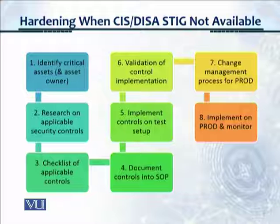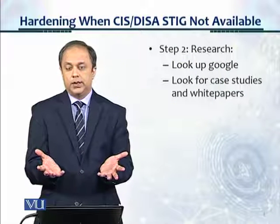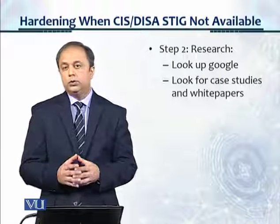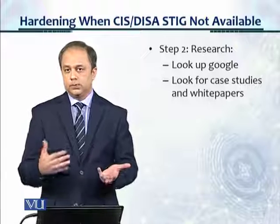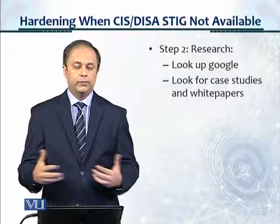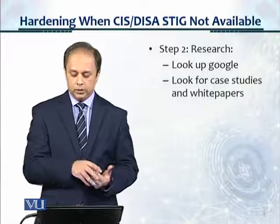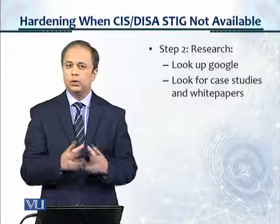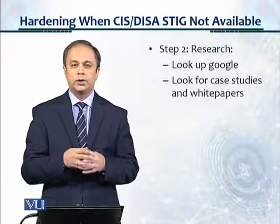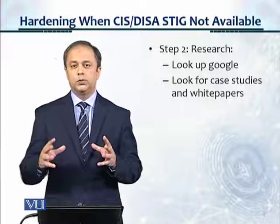Step three was making the checklist; step four was making the SOP. Now, because we didn't find a CIS or DISA STIG benchmark, you need to do real research. You look up Google — a primary mechanism I use all the time. Whenever I'm looking for security controls I didn't find in CIS or DISA, I always start with Google. You look for case studies, white papers, other instances where people have done this before, and guidelines — and you'll find a lot of information.